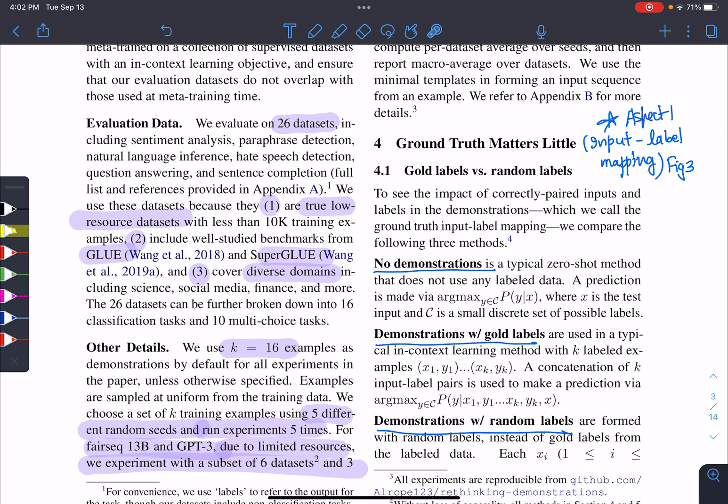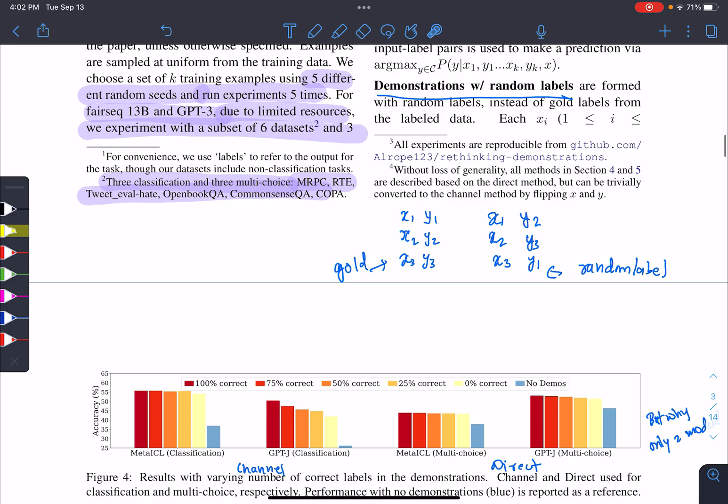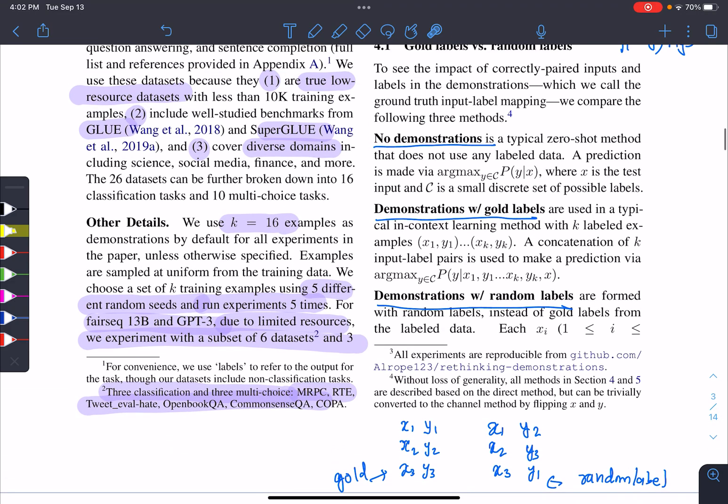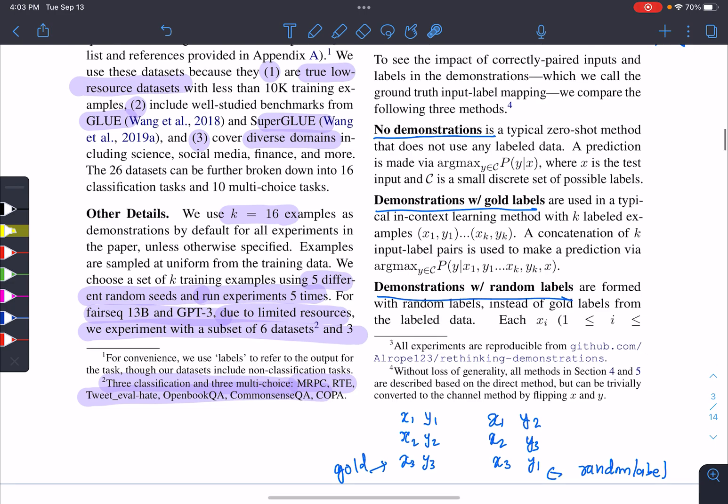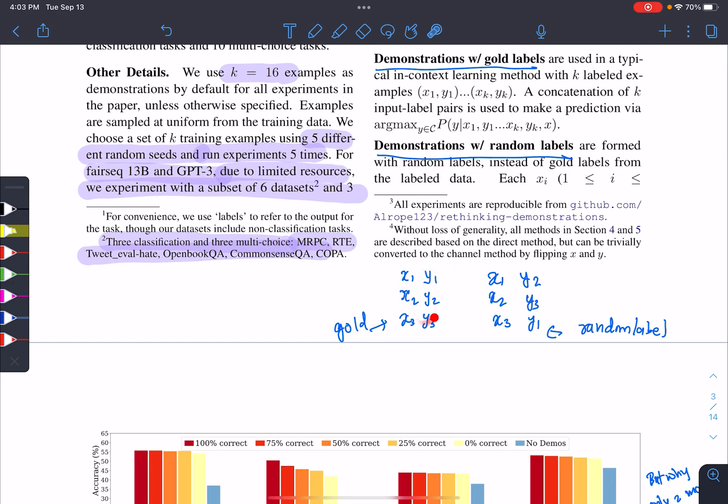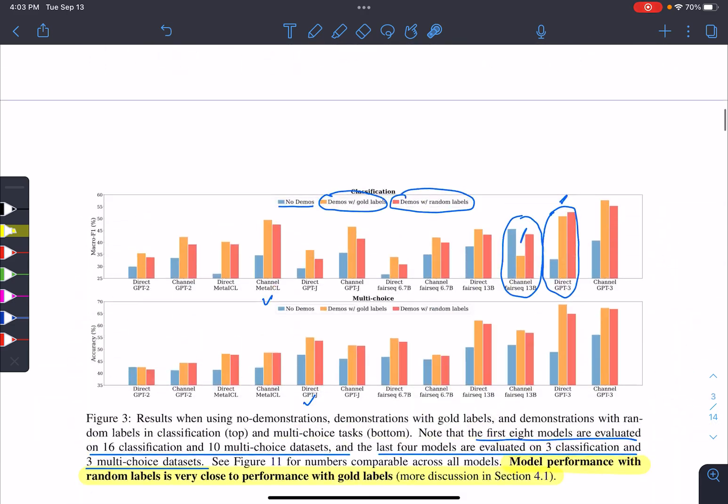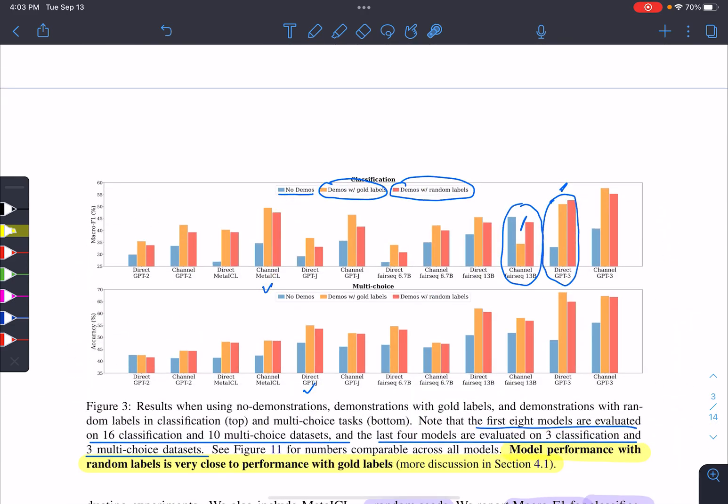Now there are four aspects. For aspect one, there was no demonstration, there was demonstration with gold label, demonstration with random label. What does this mean? No demonstration means there are no examples, only the test input. Demonstration with gold labels is the actual labels with it. Demonstration with random labels is the labels are reshuffled, but they belong to the same label space. And what they found was, no demonstration has very low performance.